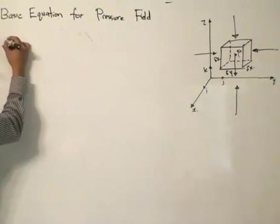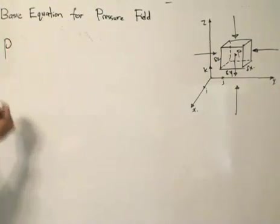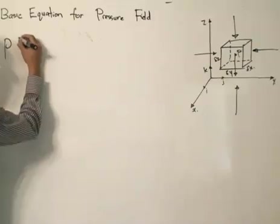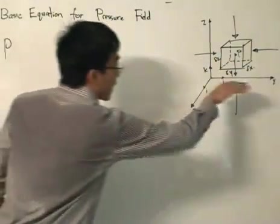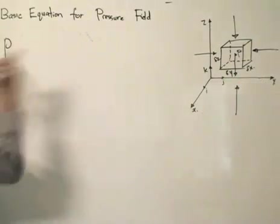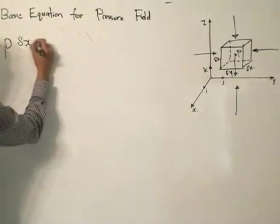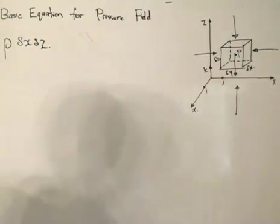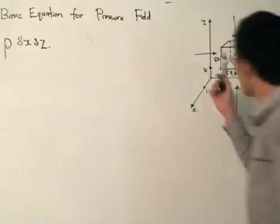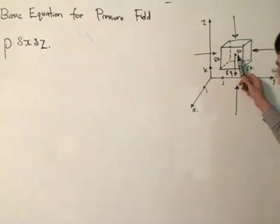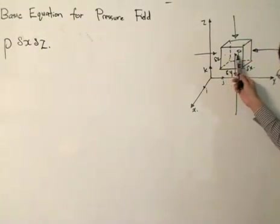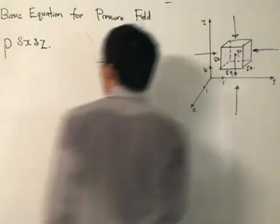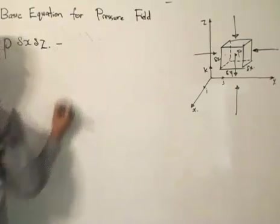We start with the pressure at the center, P, multiplied by the surface area. We are finding the force in the direction of the y-axis, so in this case it would be delta x delta z. However, this quantity gives us the force acting at that point. We want the force acting at this point which is a bit different from the center. I'm going to write it down. You might be shocked, but I'll explain it.